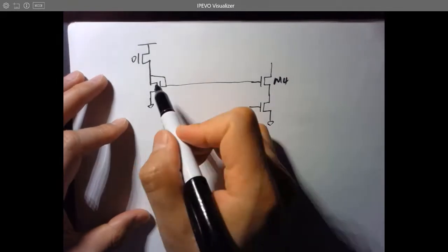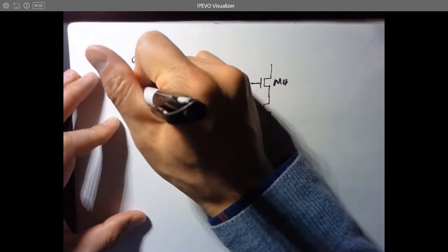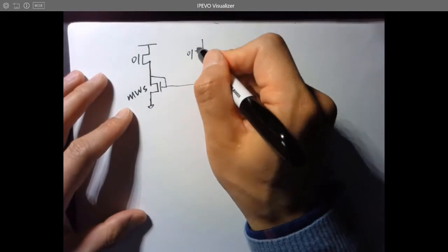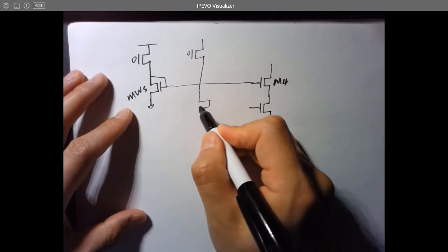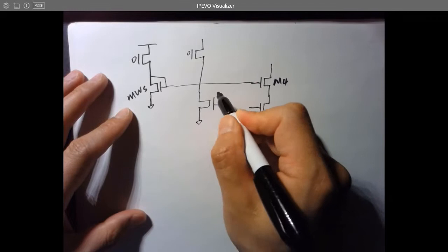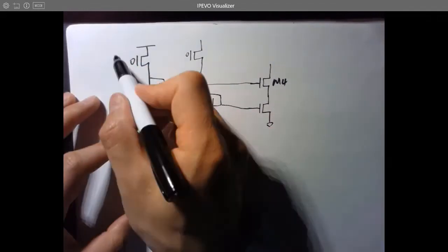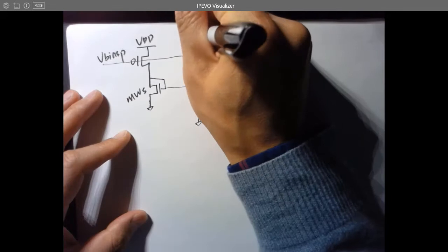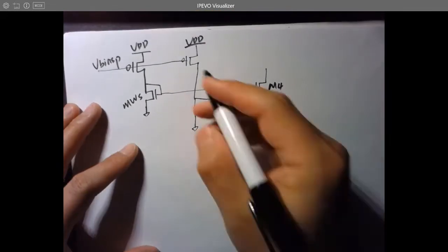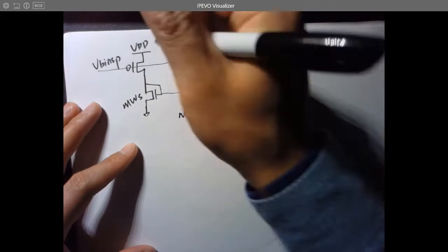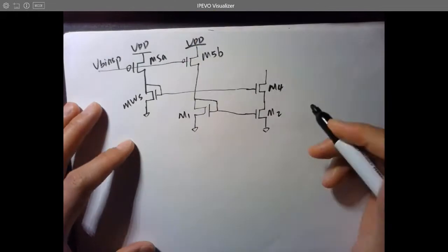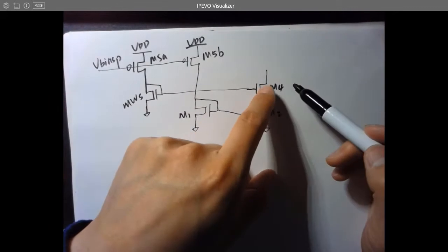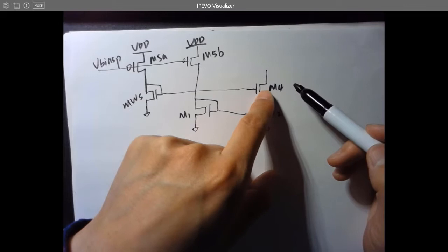This is the task of this NMOS transistor — the NMOS that right-swing. You need another current source to bias this guy, so you want to do them separately. V-bias-P, VDD — that's M1, M2, M4, M5A, M5B. We don't have M3 right now because we want to keep all the names of the corresponding transistors consistent.